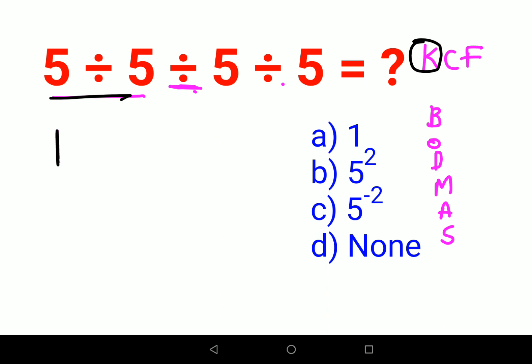Now we keep the first number as it is and then you change. C stands for change. So change the division sign to multiplication and then flip. You flip the number 5. So basically flipping is equal to reciprocal. So reciprocal of 5 will get you 1 upon 5.